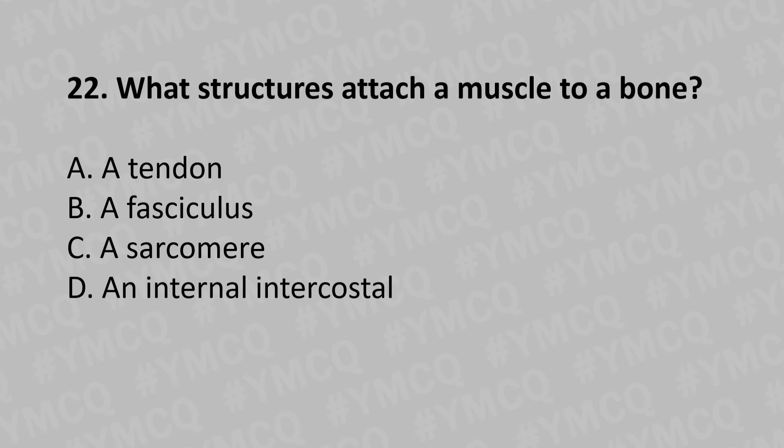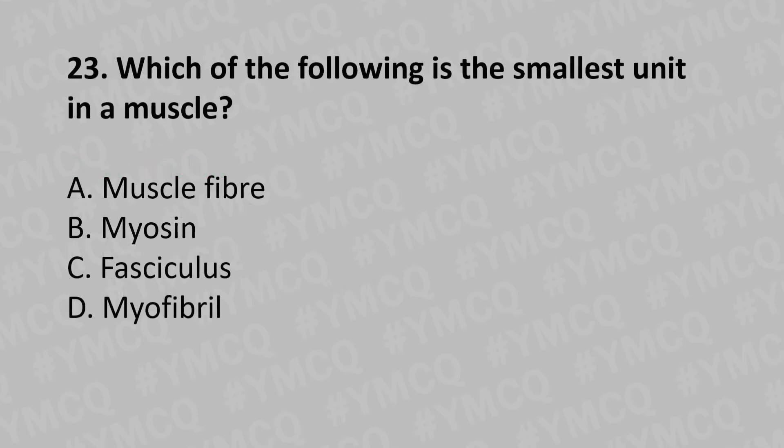Moving to our 22nd question: What structure attaches a muscle to the bone? Option A: a tendon, Option B: fascia, Option C: the sarcomere, Option D: an internal intercostal. The answer is Option A: a tendon.